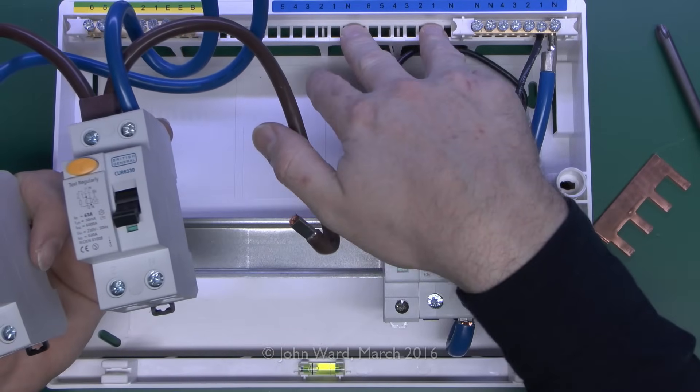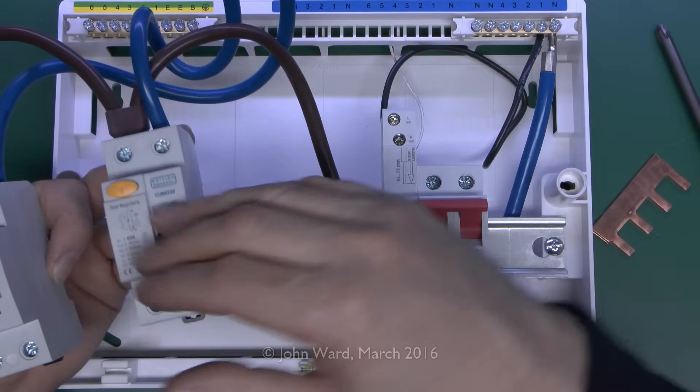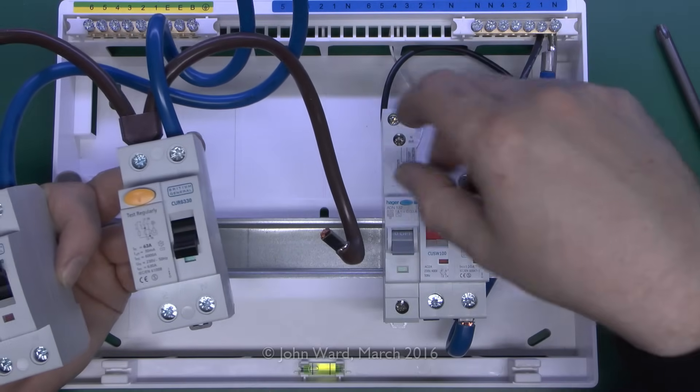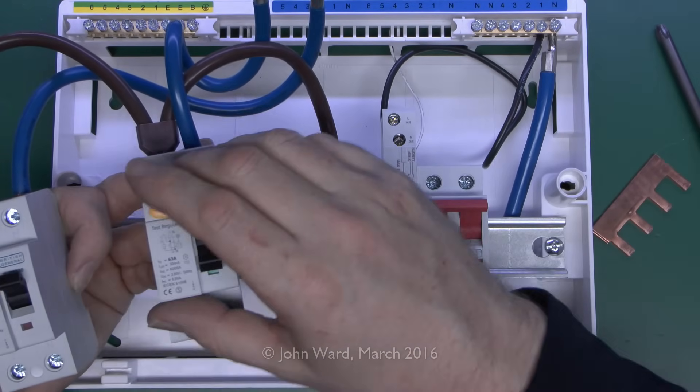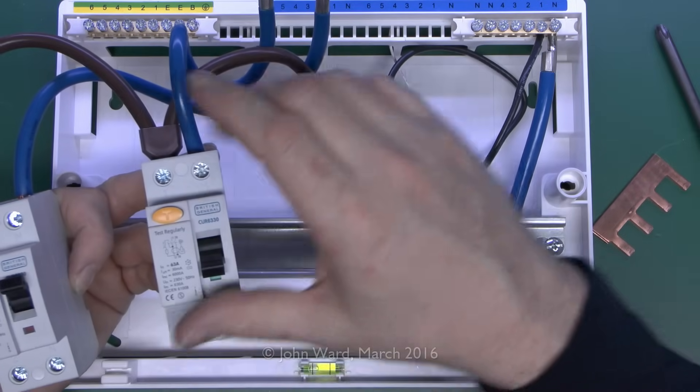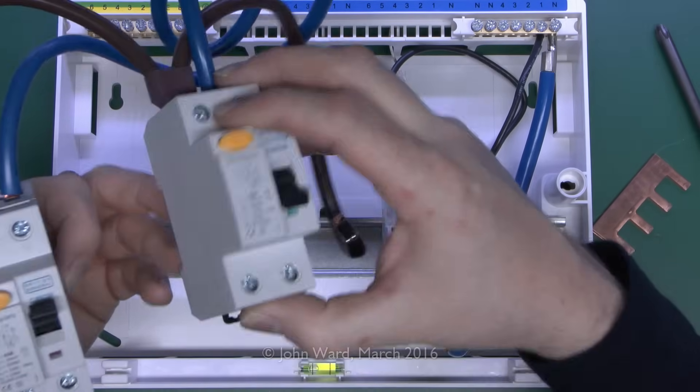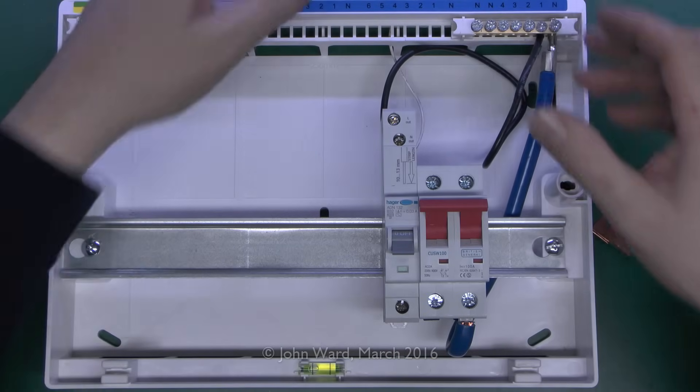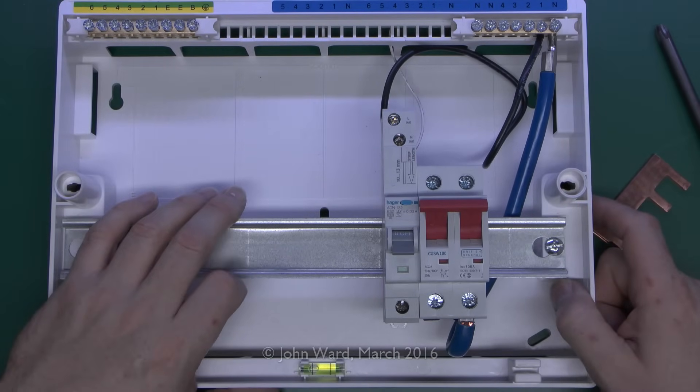Because it's important that the current is kept separate as each one has to monitor the current flowing through for the devices it's covering only and if not it's simply going to trip and go off every time you attempt to switch anything on.